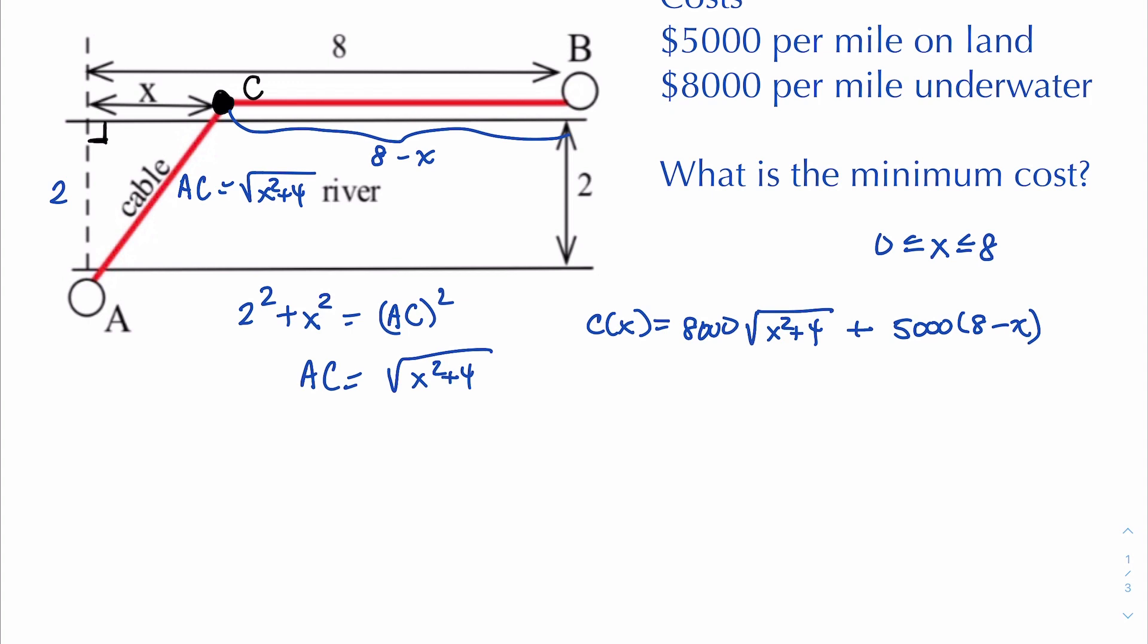That means we can apply the extreme value theorem which basically says if you have a continuous function on a closed interval there is a minimum and there is a maximum guaranteed. So we're going to utilize that instead of using the second derivative test this time.